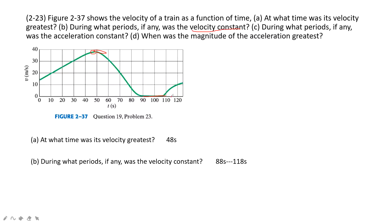The third question: during what periods was the acceleration constant? As we talked about, on the V-t graph, acceleration is the slope. So this region must be, and then maybe this part. So we can write it is still there - 88 to 118 seconds.